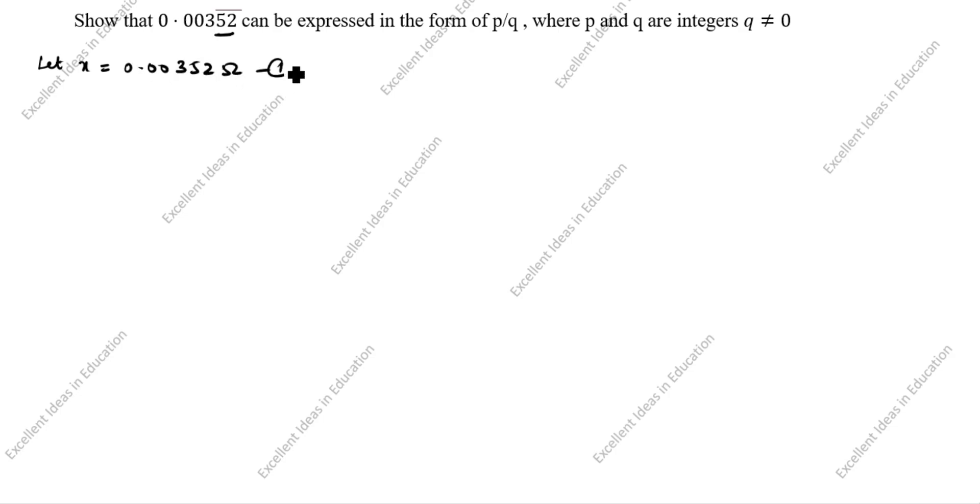Here also, a two digit bar can be expressed in the form of p by q, where p and q are integers and q is not equal to 0. Let x be equal to 0.003525̄2̄ — this is the first equation.